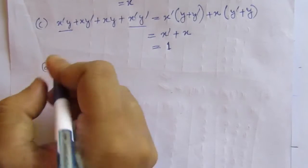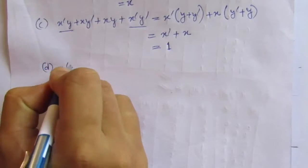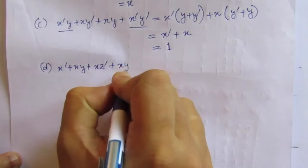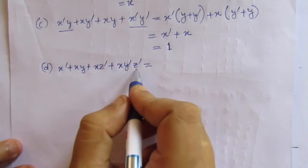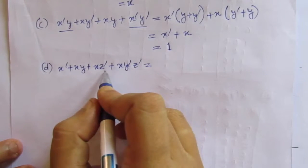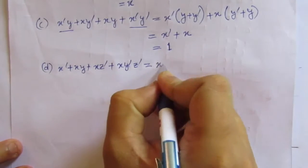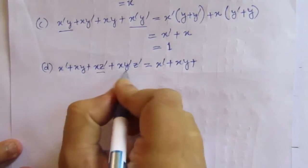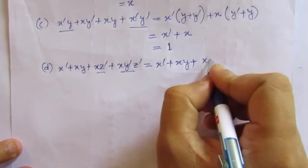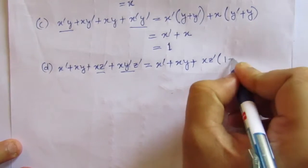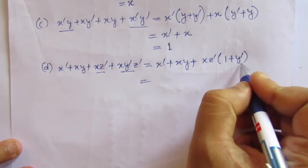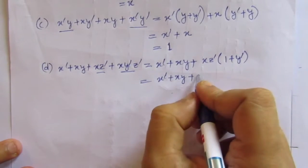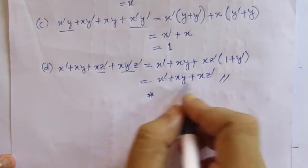Now let us solve the fourth part: x̄ + xy + xz̄ + xȳz̄. If we take xz̄ common from the last two terms, we get xz̄(ȳ + 1), which equals xz̄. So we are left with x̄ + xy + xz̄. This is the minimum number of terms for this expression.